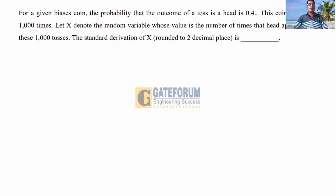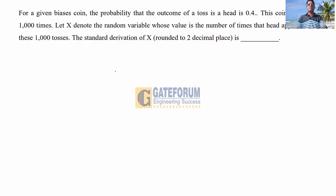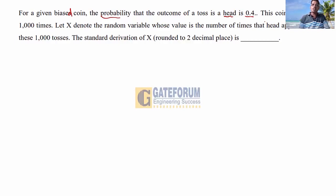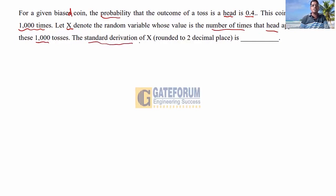Next question: for a given biased coin, the probability that the outcome of a toss is a head is 0.4. This coin is tossed 1000 times. Let X denote the random variable whose value is the number of times a head appeared in these 1000 tosses. The standard deviation of X, rounded to two decimal places, is what? This is from engineering mathematics, probability and statistics, distributions.